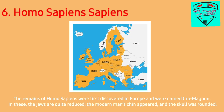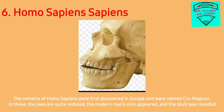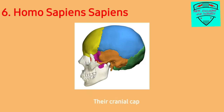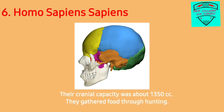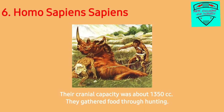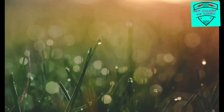The sixth stage is Homo sapiens sapiens. The remains were first discovered in Europe and were named Cro-Magnon. In these, the jaws are quite reduced, the modern man's chin appeared, and the skull was rounded. Their cranial capacity was about 1350 cc. They gathered food through hunting. This is how evolution took place.